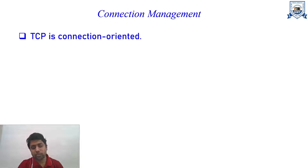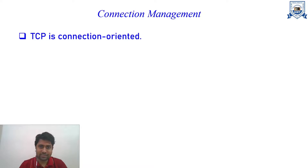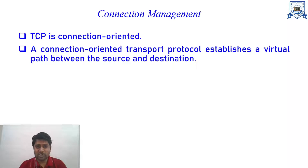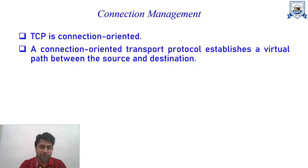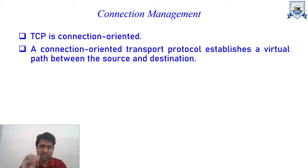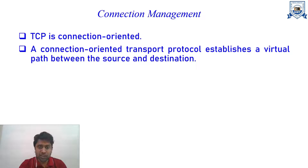In the transport layer we have two protocols: TCP (Transmission Control Protocol) and UDP (User Datagram Protocol). TCP is connection-oriented and UDP is connectionless. With a connectionless protocol, there's no need to worry about connection establishment or termination — data is simply transmitted. For example, SMTP uses UDP, so the email is just sent to the mail transfer agent with no connection establishment.